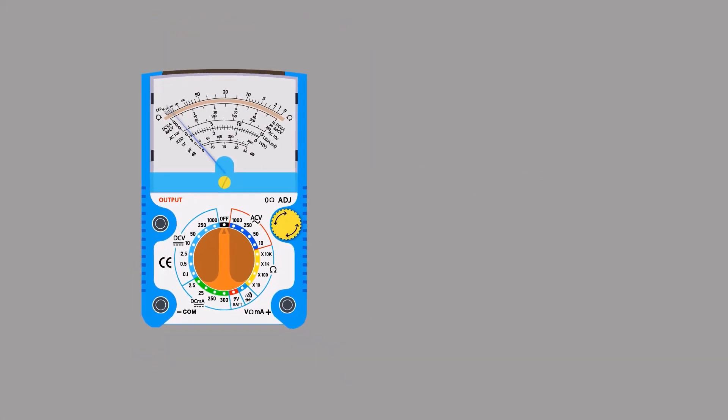How we can measure AC voltage with the help of analog multimeter. We have a multimeter. To measure AC voltage, connect black probe with common port and red probe with positive port.